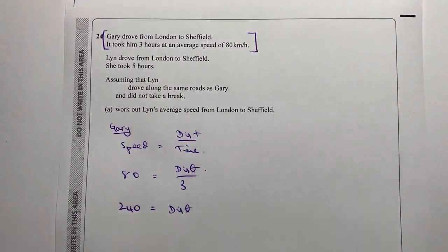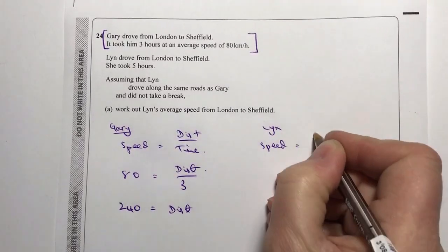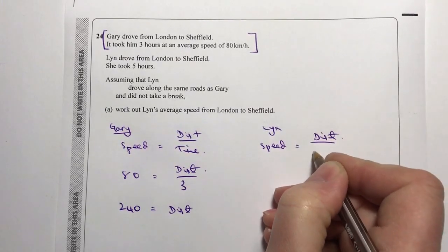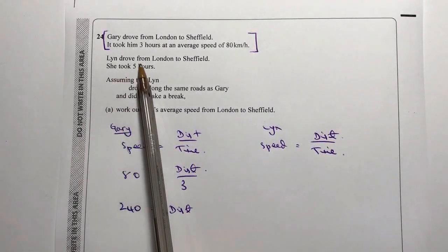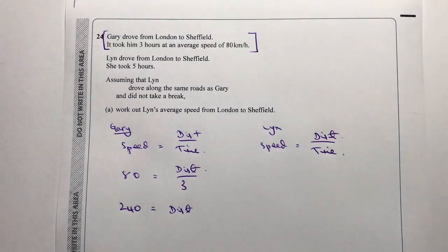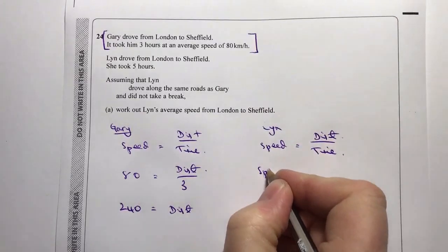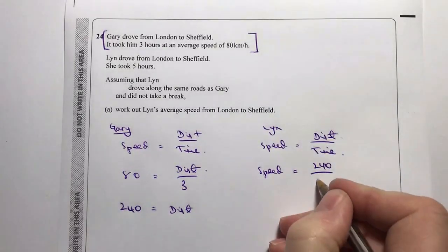Now let's look at Lynn's journey. Lynn also had speed equals distance over time. I haven't worried too much about what Lynn is doing yet — I just know she exists. She drove from London to Sheffield as well, and it took her five hours. Since she drove the same route, the distance is exactly the same: 240 kilometres.